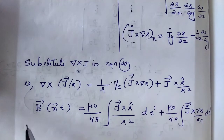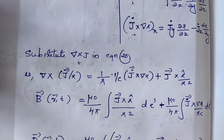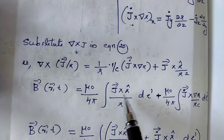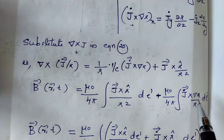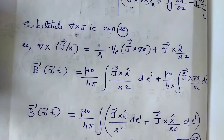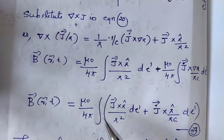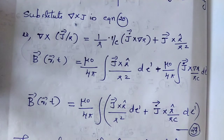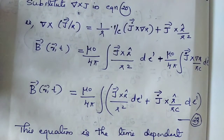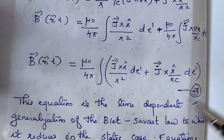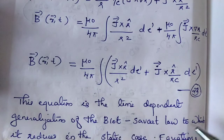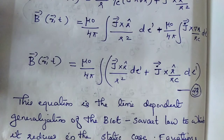The magnetic field B of r equals mu0 by 4 pi, integral of [J cross r-hat by r squared plus J-dot cross r-hat by r c] d-tau prime. This is equation 23 — these two equations for E and B are known as Jefimenko's equations. Equation 23 is the time-dependent generalization of the Biot-Savart law, to which it reduces in the static case. This concludes the discussion of Jefimenko's equations.